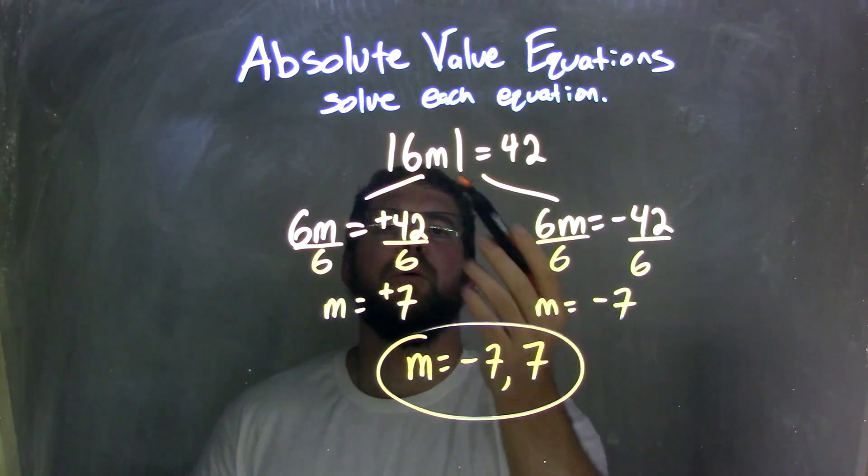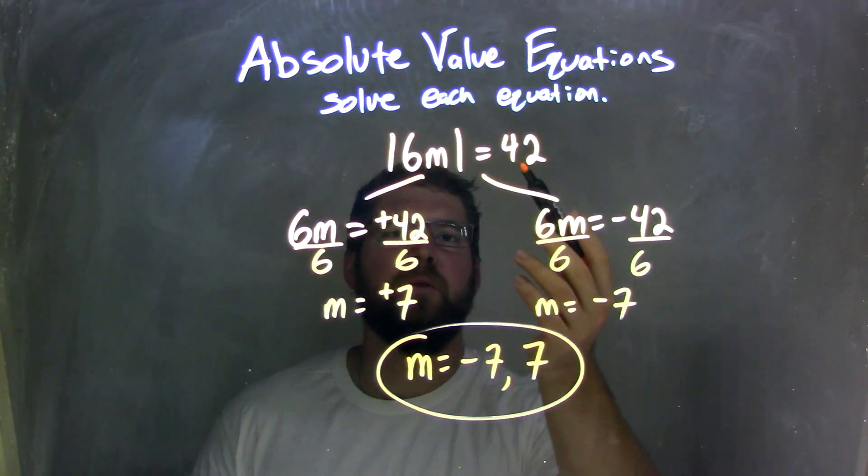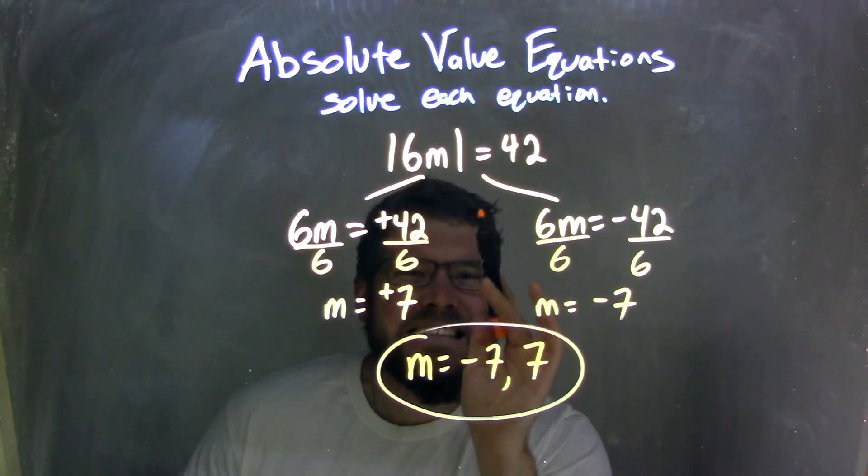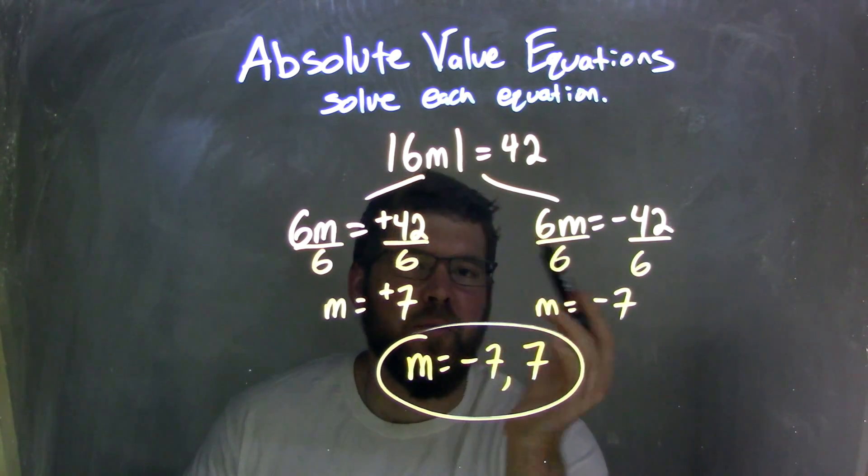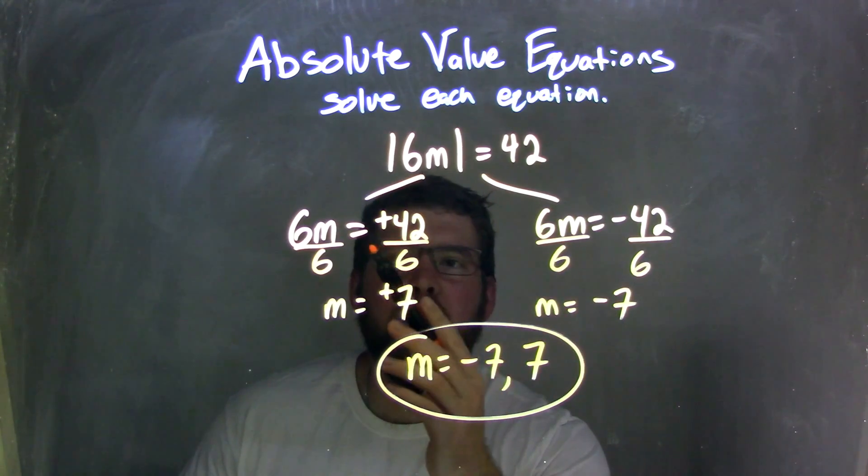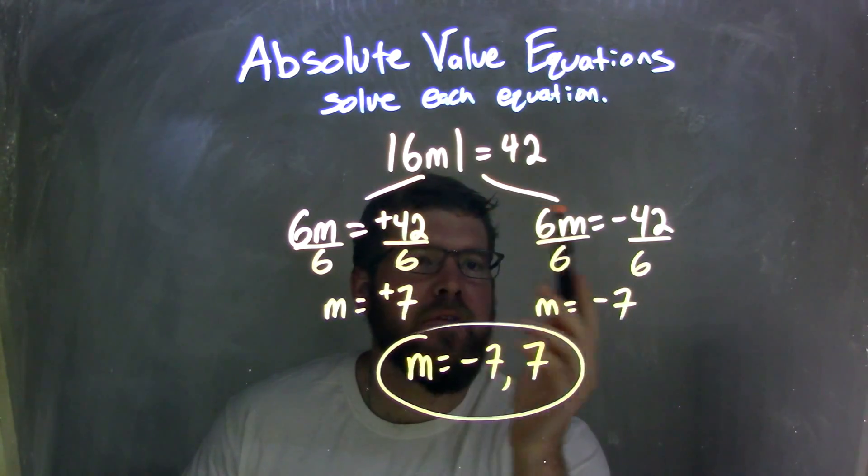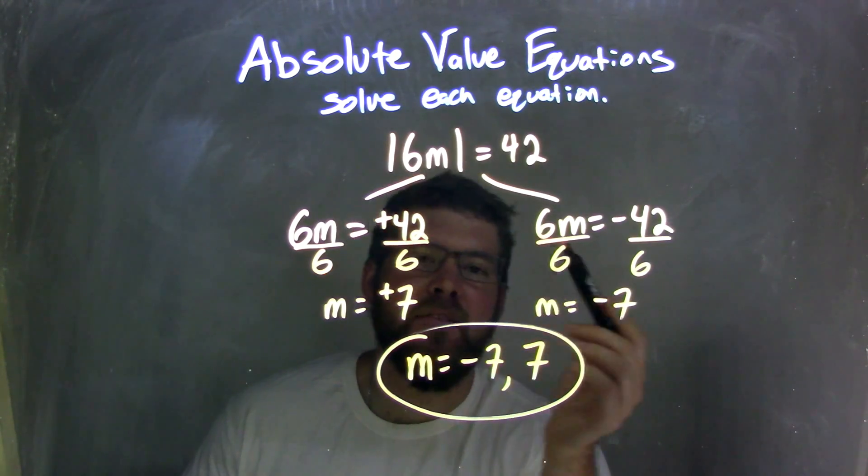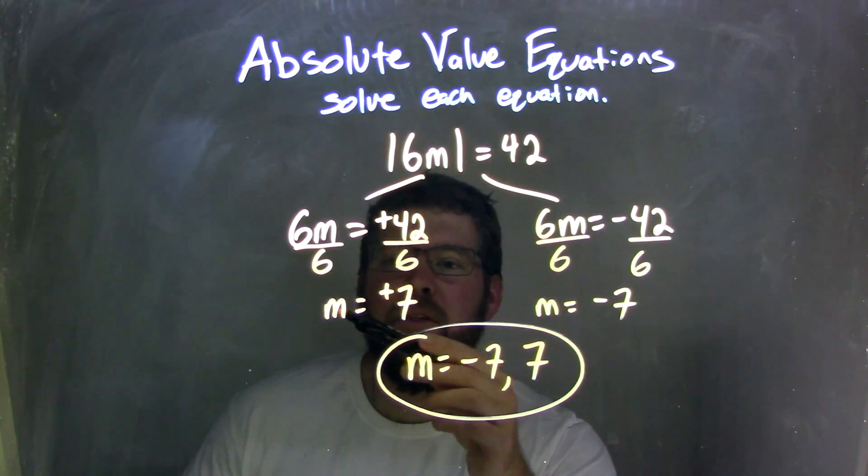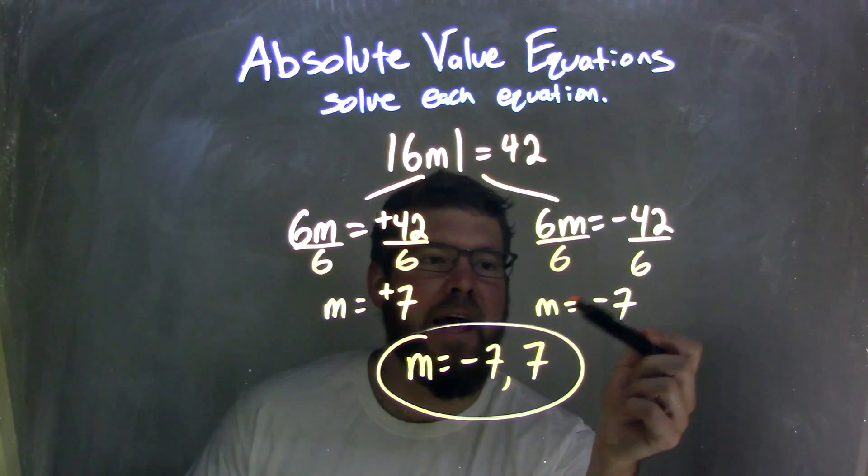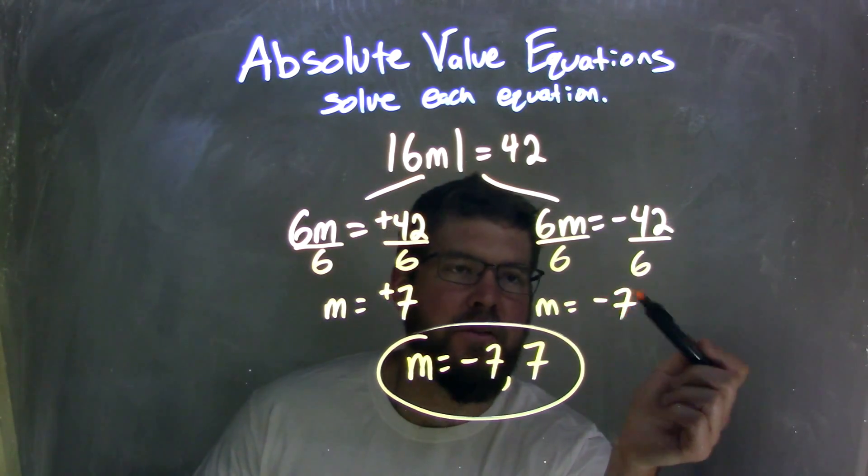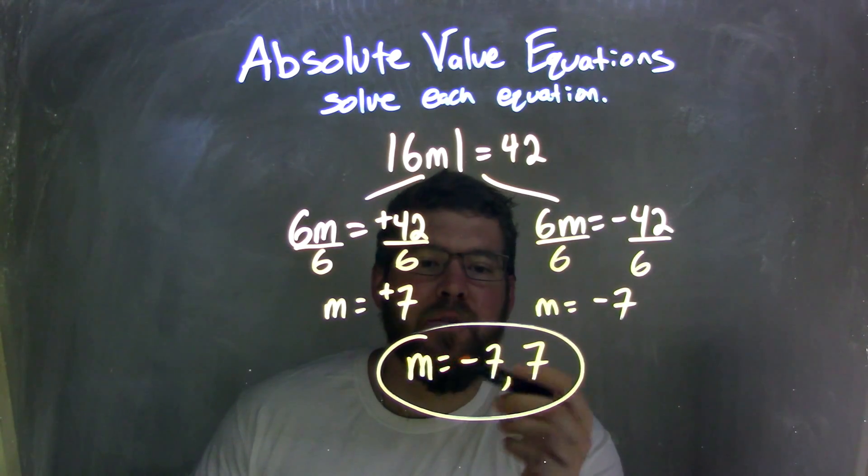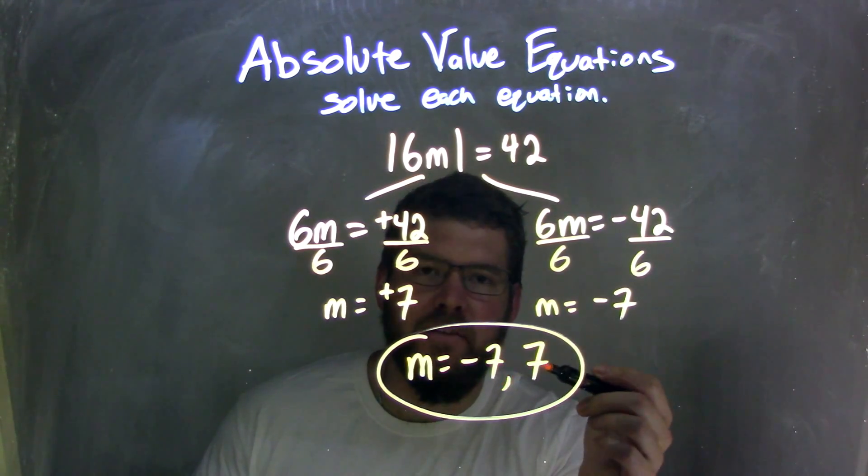So let's recap. We start with the absolute value of 6m equals 42. The absolute value, we need to isolate that first. It's already isolated, so we're good. We then separate it to be 6m equals a positive 42 and 6m equals a negative 42. I then divided 6 to both sides of both equations, leaving me with m equals a positive 7 and m equals a negative 7. And so our final answer is m equals a negative 7 and a positive 7.